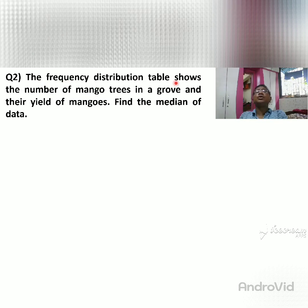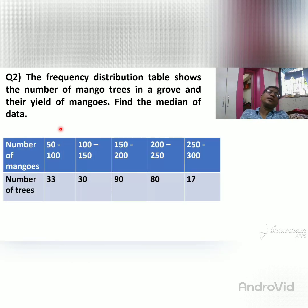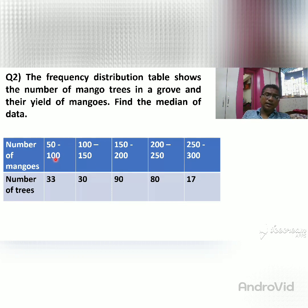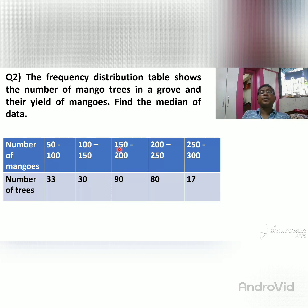Looking at the problem: the first column gives number of mangoes and the second gives number of trees. The data is: 50–100 mangoes, 33 trees; 100–150 mangoes, 30 trees; 150–200 mangoes, 90 trees; 200–250 mangoes, 80 trees; 250–300 mangoes, 17 trees.